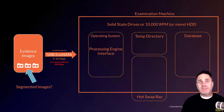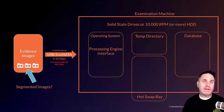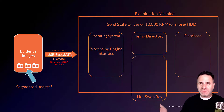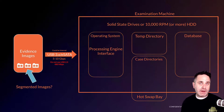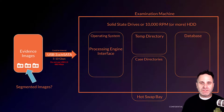If you have faster drives than others, the fastest drive should hold your database. The database is something you're going to be using through the whole analysis process, whereas the processing engine really only comes into play when you're processing. I also like to put my case directories on their own drive — for the IO of the disk as you work through your case, expanding items and those different types of things that will be stored in the case directory.